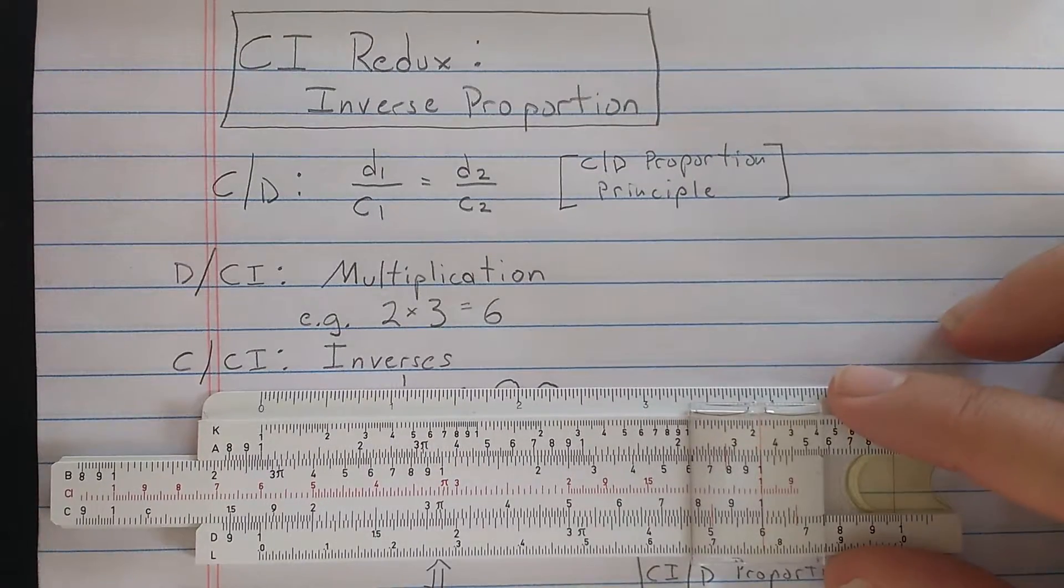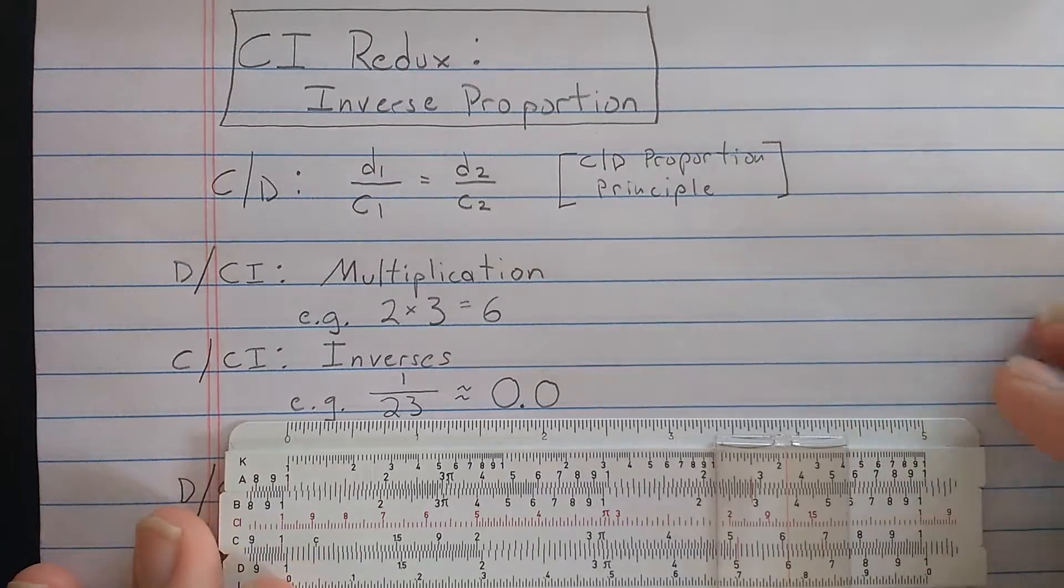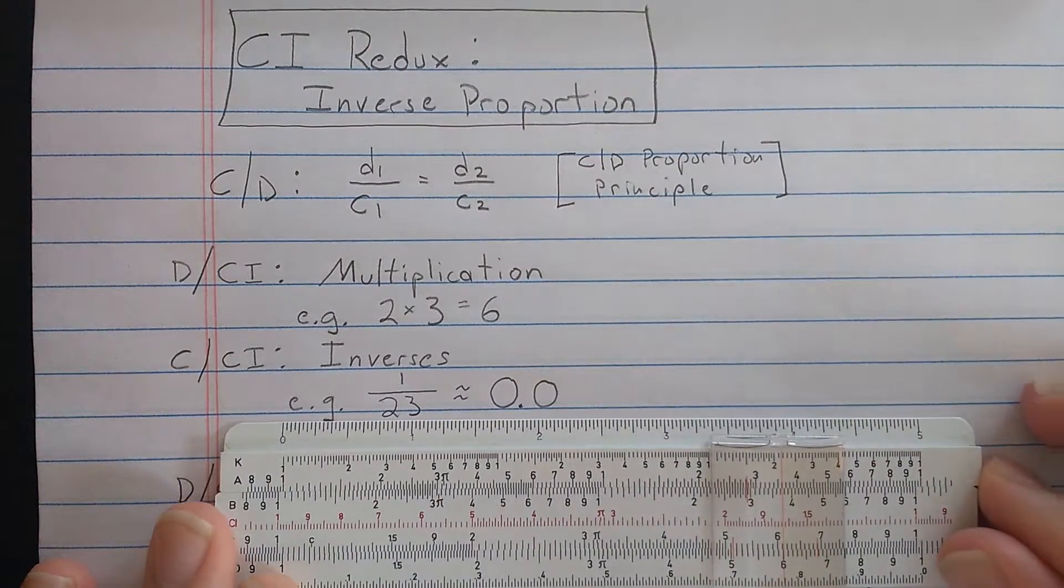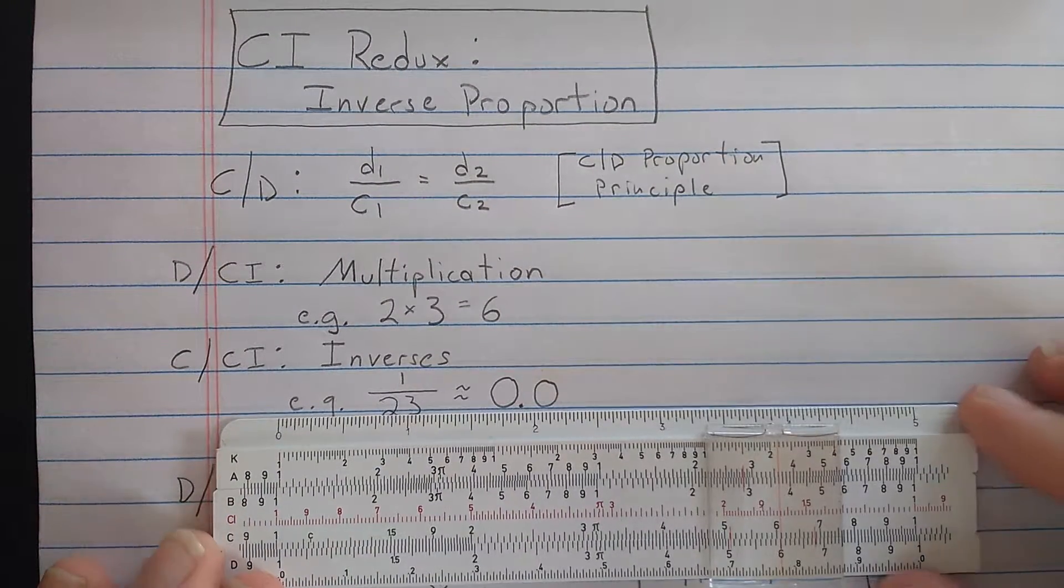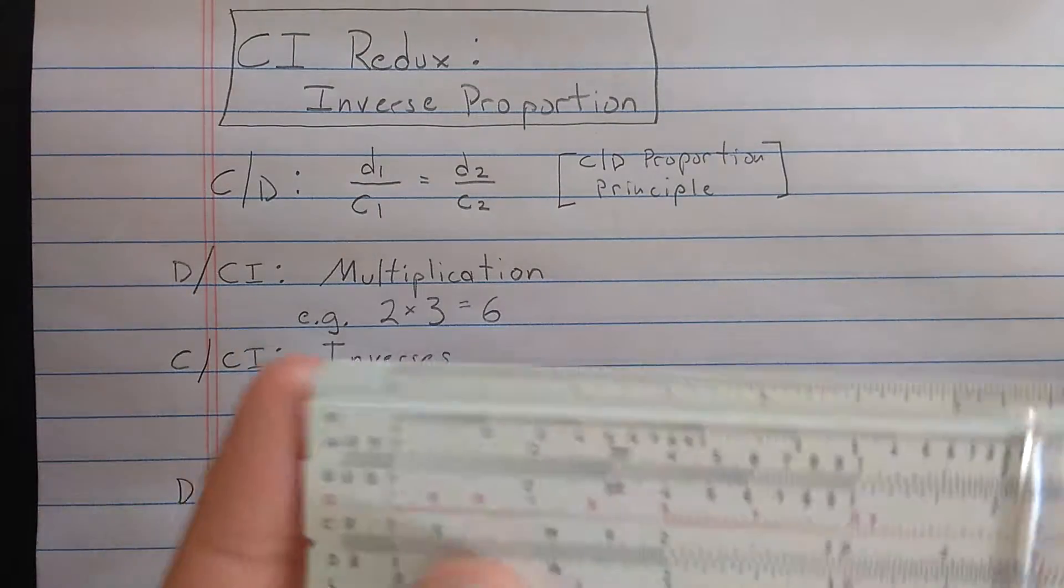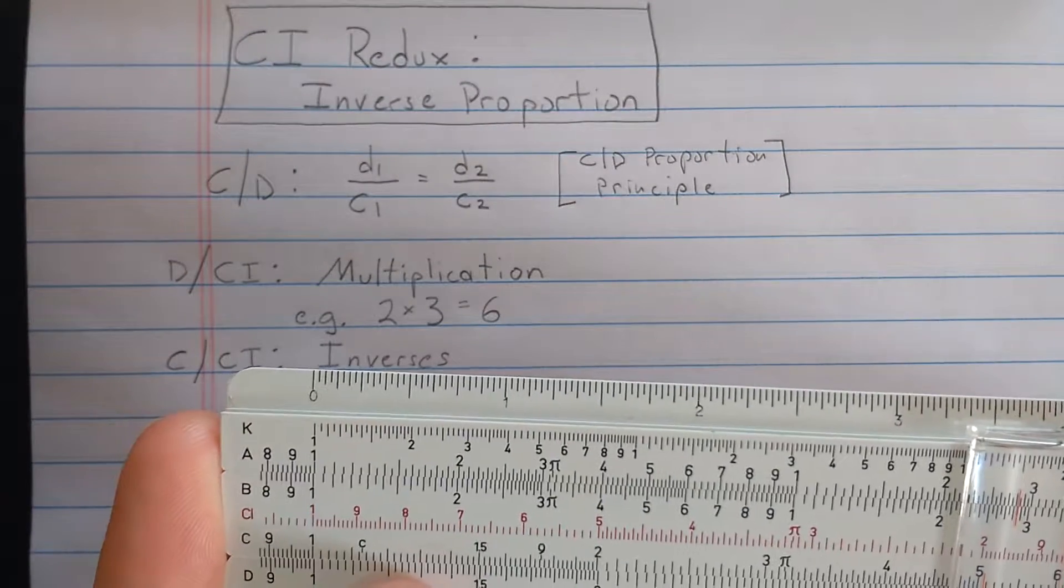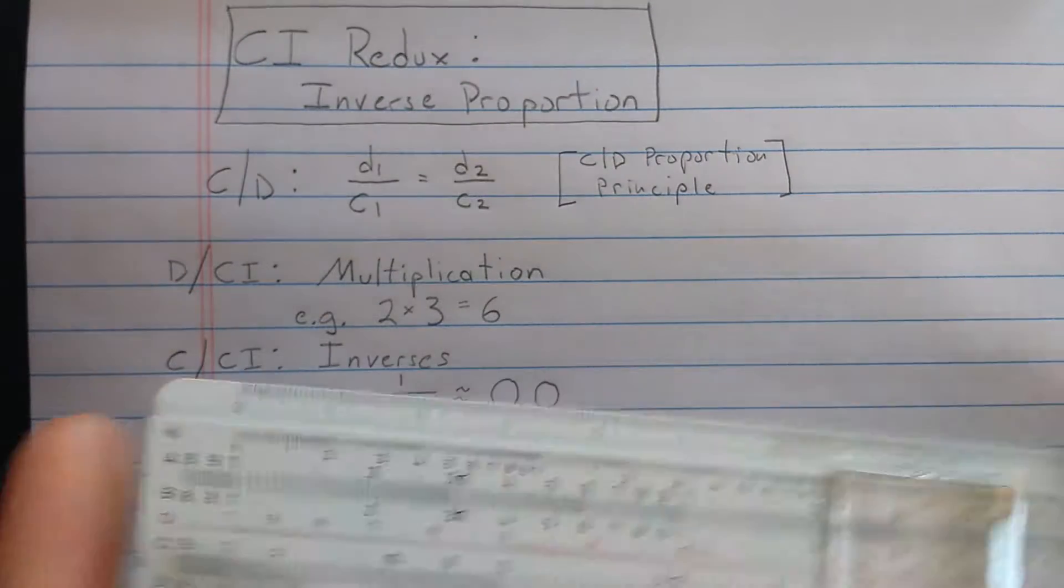Of course, we also said it could compute inverses. So inverses, for example, you can read directly C against CI, but I'll close the rule here so you can read either C or D.